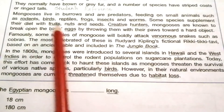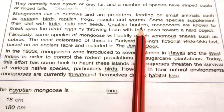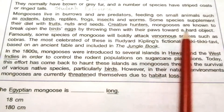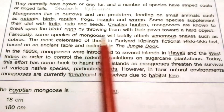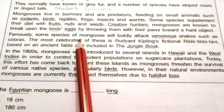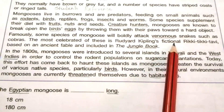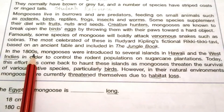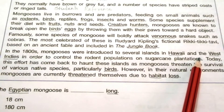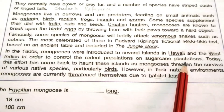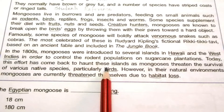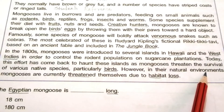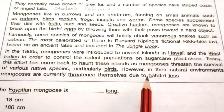They normally have brown or grey fur, and a number of species have striped coats or ringed tails. Mongooses live in burrows and are predators, feeding on small animals such as rodents, birds, reptiles, frogs, insects and worms. Some species supplement their diet with fruits, nuts and seeds. Creative hunters, mongooses are known to break open birds' eggs by throwing them toward a hard object. Some species will boldly attack venomous snakes such as cobras — the most celebrated being Rikki-Tikki-Tavi from Kipling's Jungle Book. In the 1800s, mongooses were introduced to Hawaii and the West Indies to control rodent populations on sugarcane plantations. Today, this effort has come back to haunt these islands as mongooses threaten various native species, particularly birds. However, in their natural environments, mongooses are currently threatened themselves due to habitat loss.